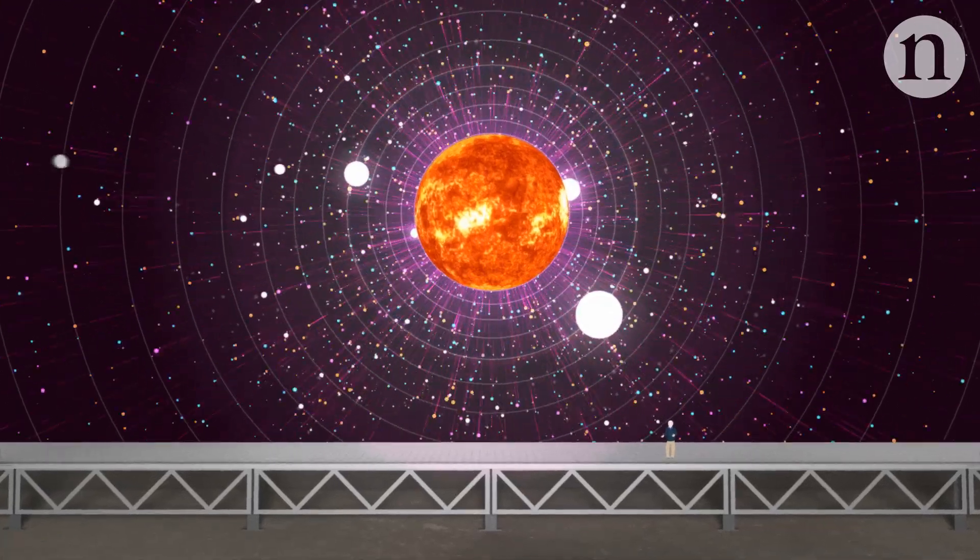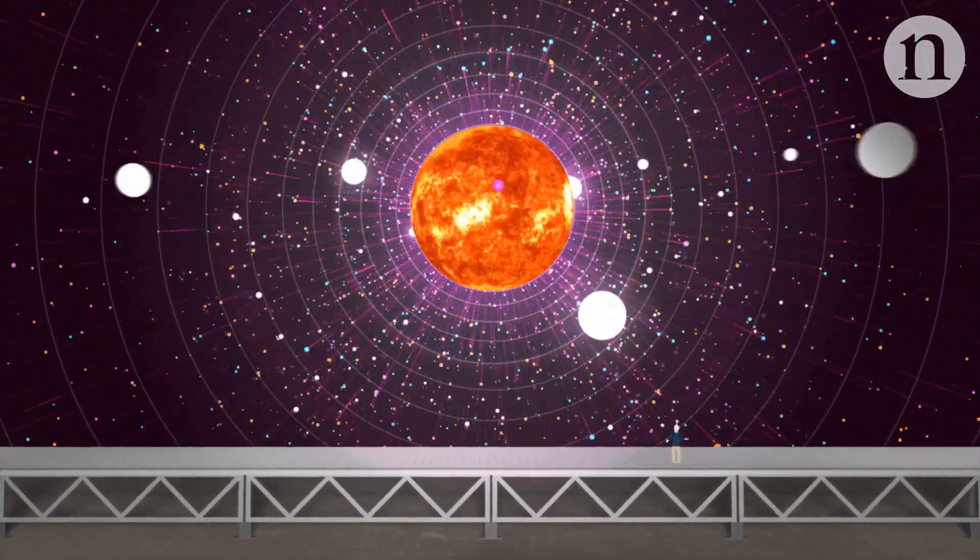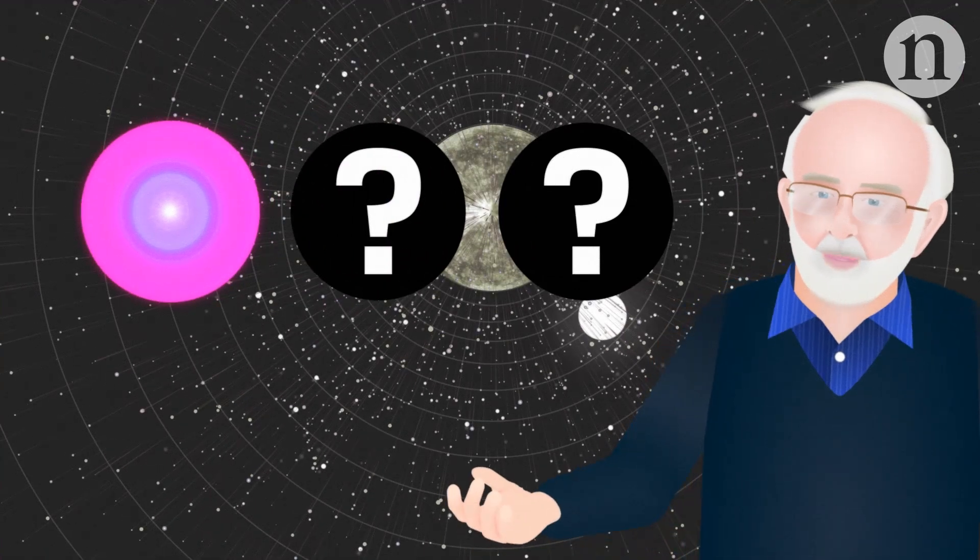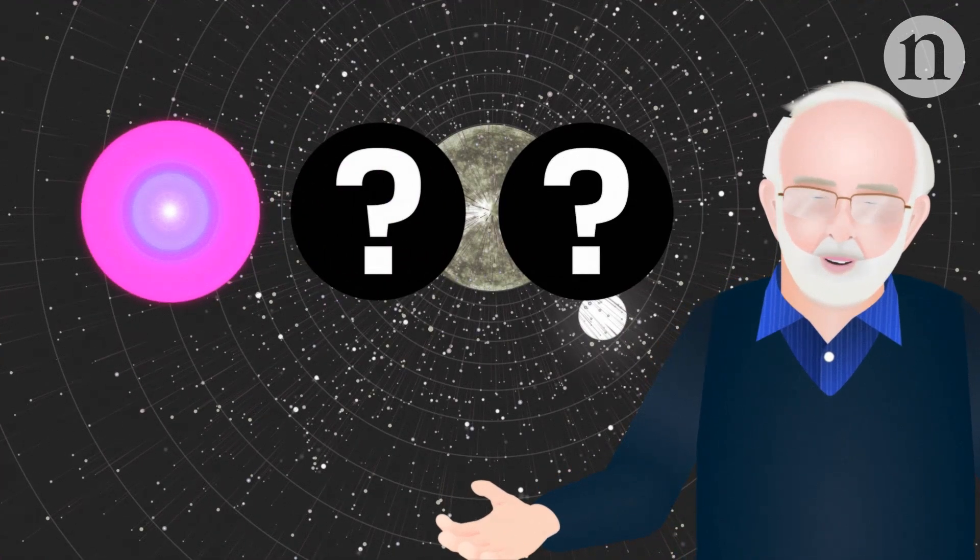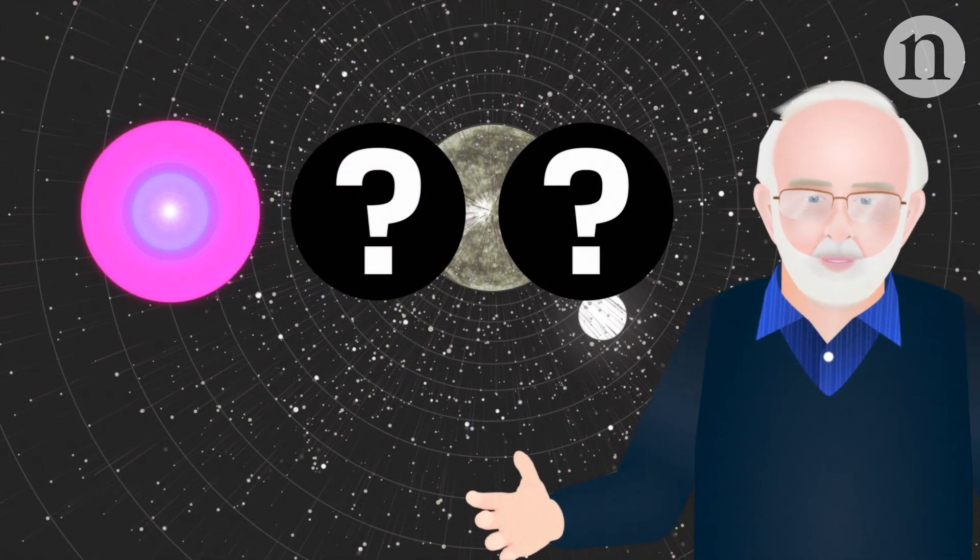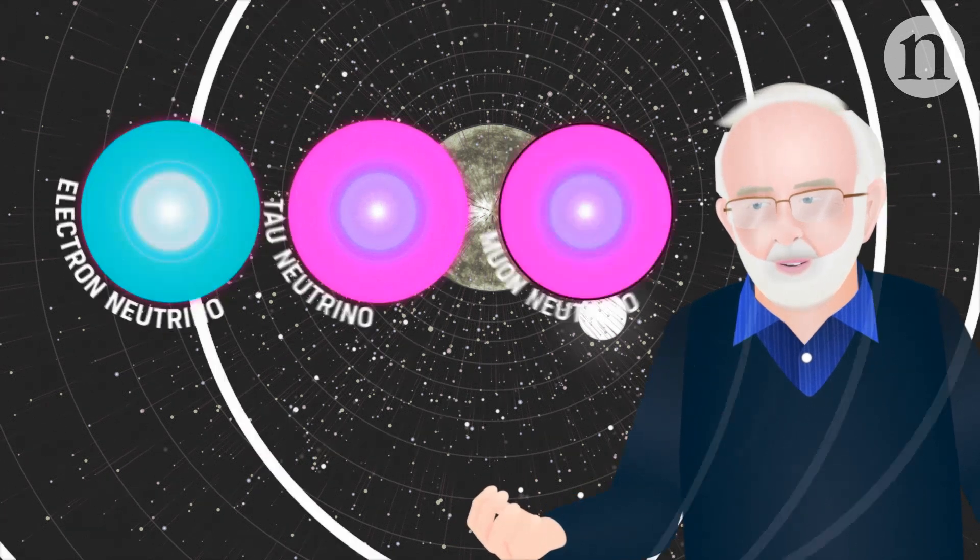We use them to probe the way in which the Sun burns. There was a puzzle because too few neutrinos were being observed. It turns out we were able to demonstrate that that is because the neutrinos changed their flavor and therefore they were being missed by other experiments.